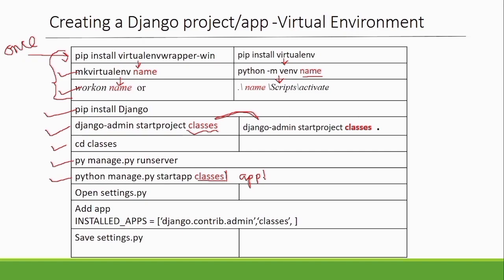After the application has been created, Django should know it exists — because one project can have multiple applications. That is why in the settings.py file, we have to register the application. If you do not register it, Django will not be able to recognize your application. Go to settings.py, find the INSTALLED_APPS list, and add your application name there.